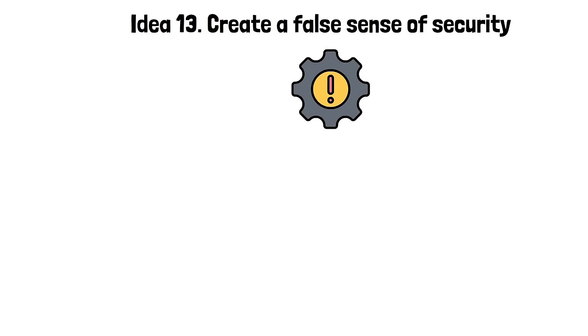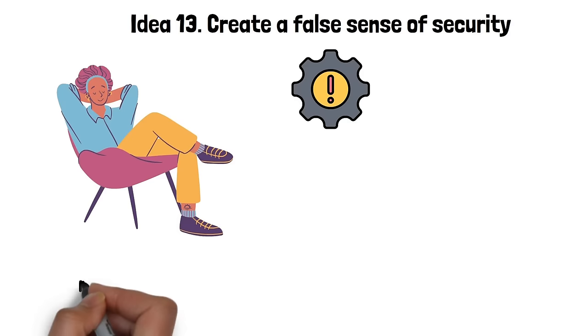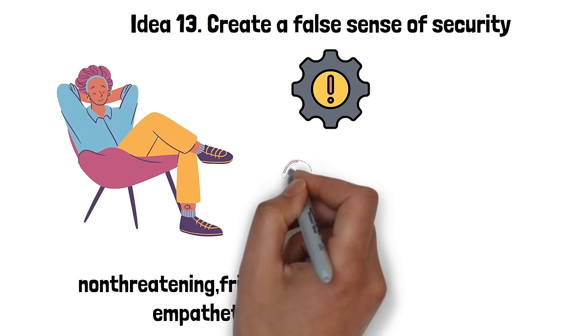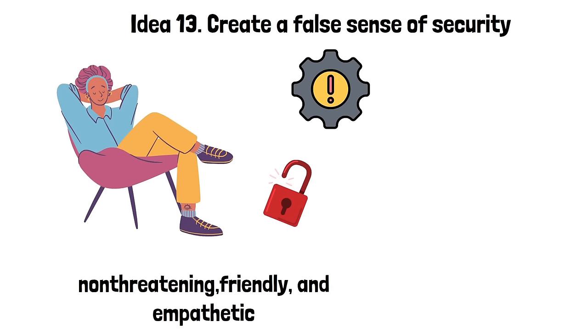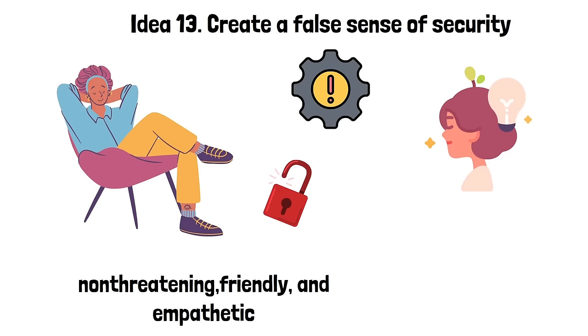Idea 13. Create a false sense of security. Creating a false sense of security is a crucial part of the seduction process. The idea here is to make the person you're trying to seduce feel comfortable and safe around you. You can achieve this by being non-threatening, friendly and empathetic. The goal is to ensure that the other person lets down their guard, making it easier for you to influence their feelings and actions. You should aim to make the person feel understood and accepted, providing a comforting presence that they can trust. This is not about manipulation, but about establishing a connection where the other person feels free to express themselves, setting the stage for deeper engagement and attraction.